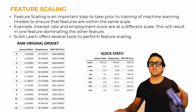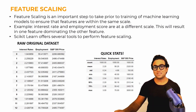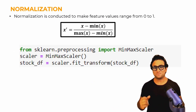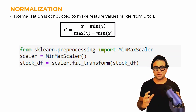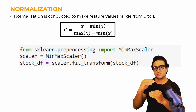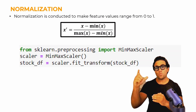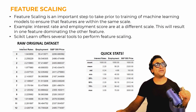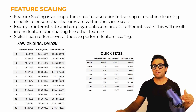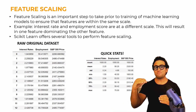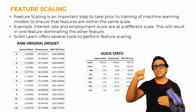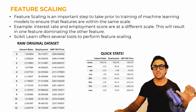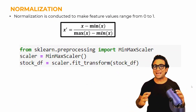To do that, we'll cover two different techniques. The first strategy is normalization. Normalization is conducted to ensure that features range between 0 and 1. So all I'm looking for is to take interest rates, employment, and S&P 500 and make sure all of them range between 0 and 1 — so min-max values of 0 and 1 for each. That's the objective.